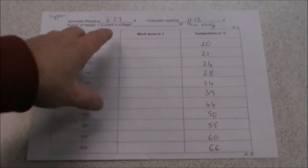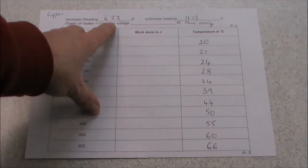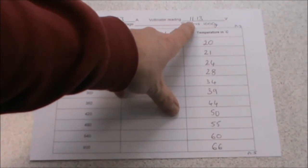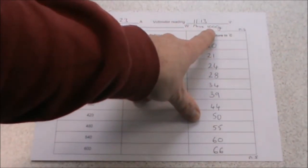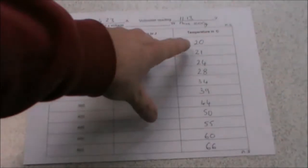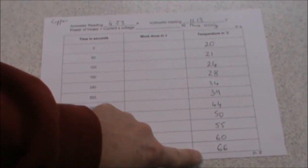Once the experiment is finished, you will have a completed results table. You need to repeat the experiment for different types of material. We've repeated it for steel blocks and aluminium blocks. Here we have a set of results that I obtained earlier. We had an ammeter reading of 4.23 amps, a voltmeter reading of 11.13 volts, and our copper block had a mass of 1000 grams.